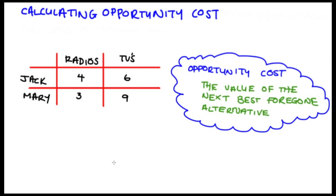So there's a very natural interpretation of opportunity cost here, given that the figures represent the maximum amount that either individual could make. We can see that Jack's opportunity cost of producing four radios is going to be six TVs. Because if he puts all of his resources into making radios he can make four of them, but that means he's not making any TVs. If he had used those resources to make TVs he could make six. So his opportunity cost of producing four radios is six TVs.